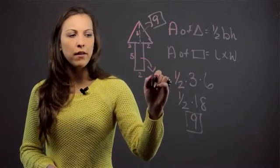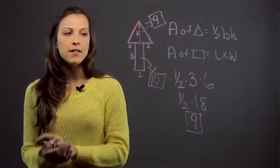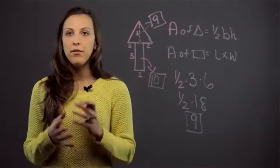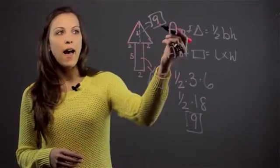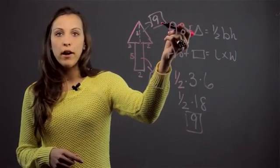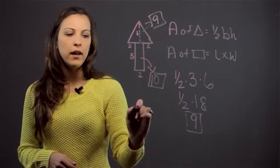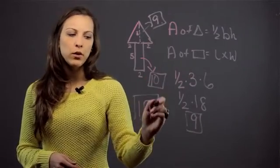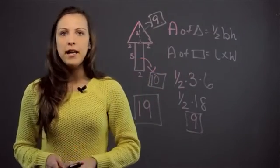That means the area of the rectangular portion of the arrow is ten. To get the area of the entire arrow, we add the area of the triangle with the area of the rectangle, and we get nineteen, whatever the units were, squared. So the area of this arrow would be nineteen.